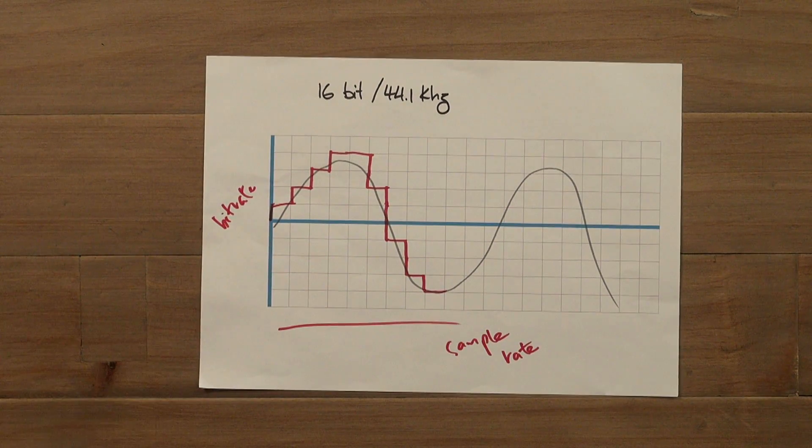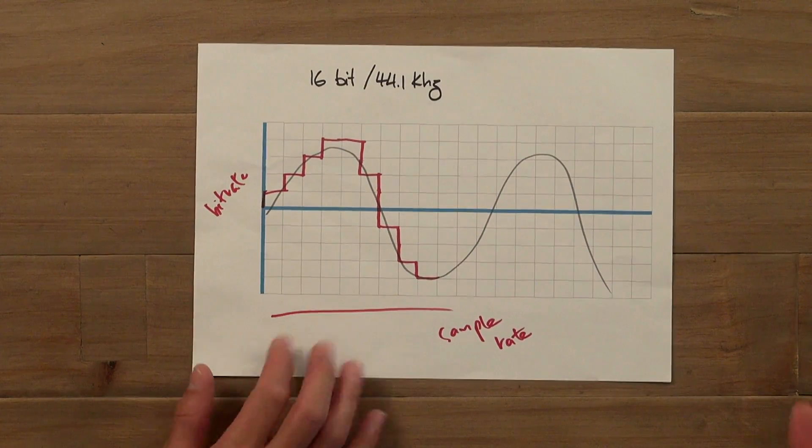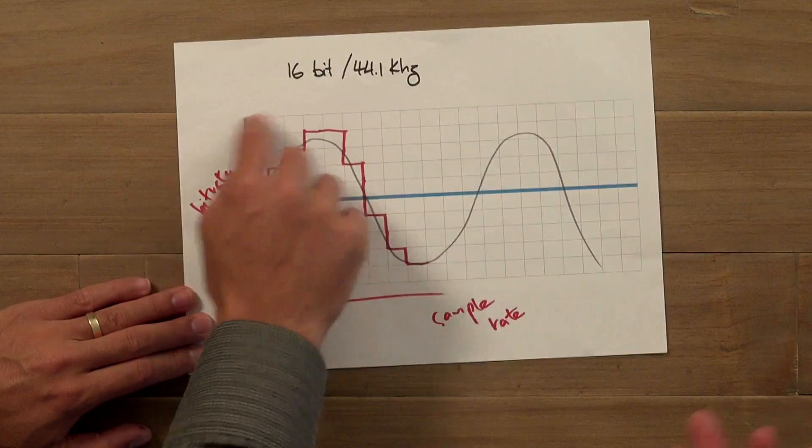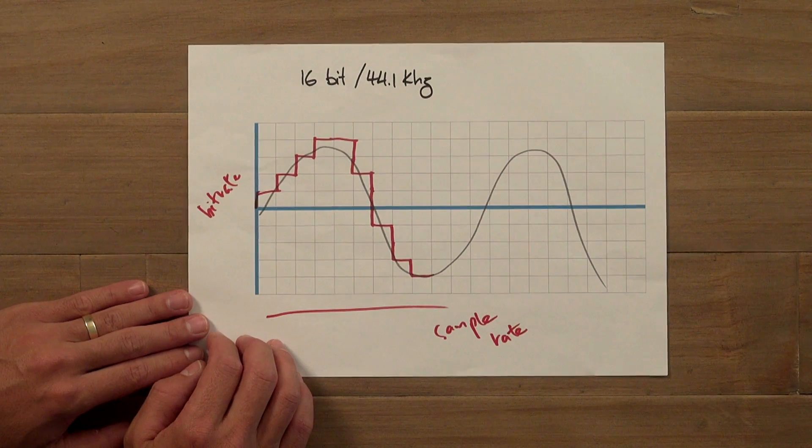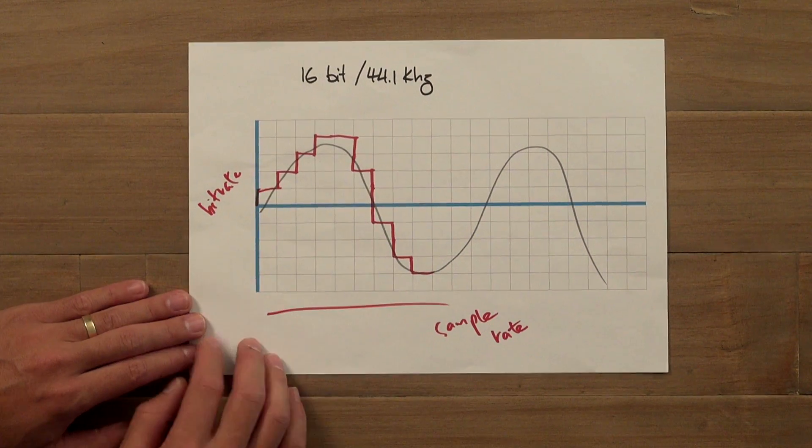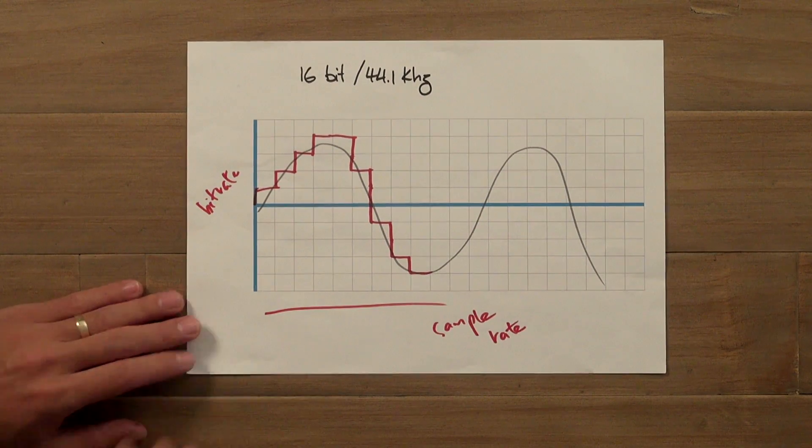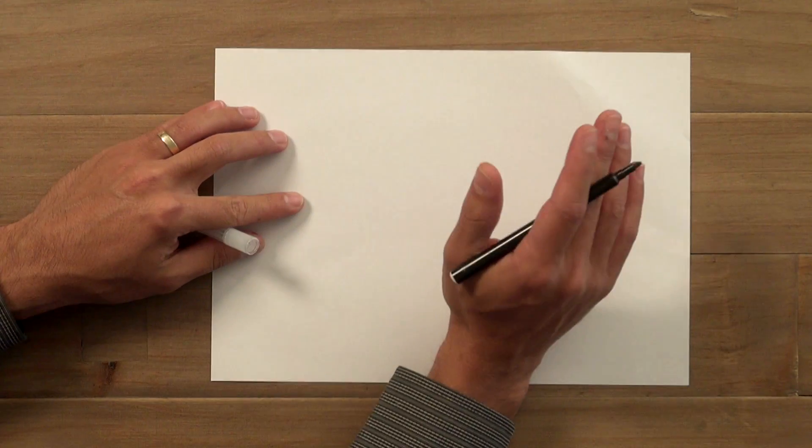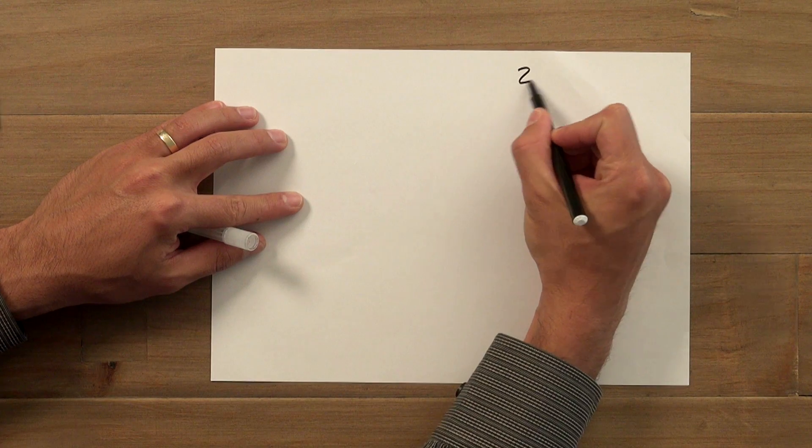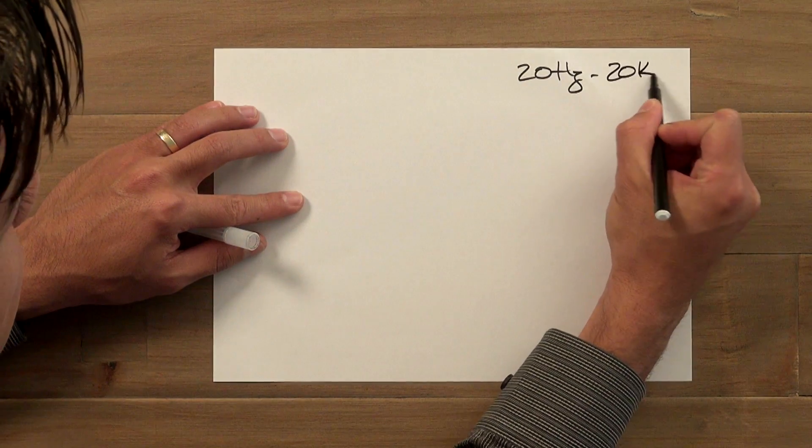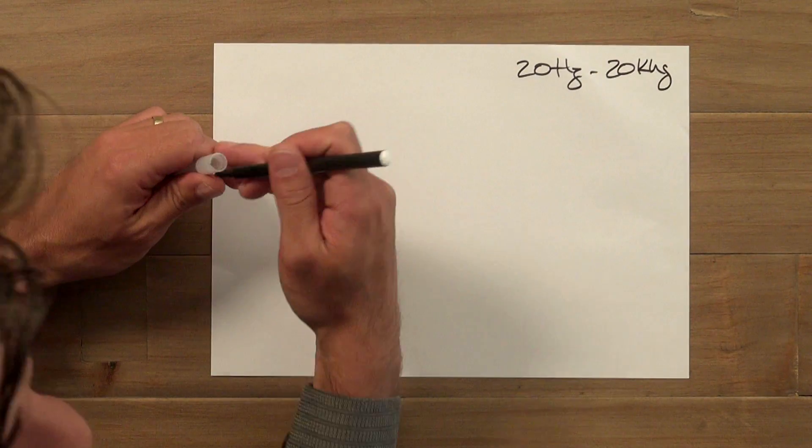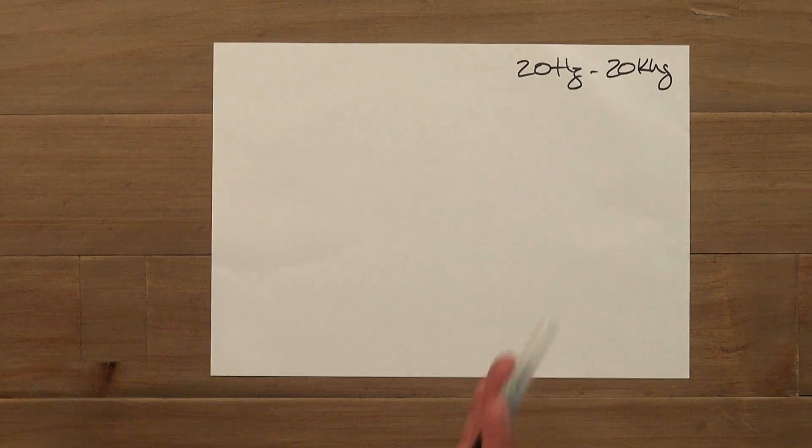Okay. So I guess the obvious question then is, I sort of understand the resolution, the bit rate, 65,000 steps. That seems pretty good to me. Why have we chosen 44.1 kilohertz, 44,000 samples per second? What's the significance of that? Yeah. No, good question. So I think just to explain why you need 44.1, humans can actually hear between 20 hertz and 20 kilohertz, 20,000 hertz. Okay. So this is like the frequency range that humans can hear.